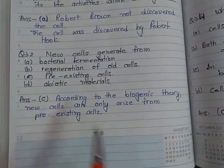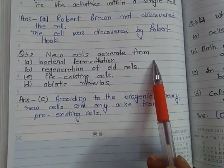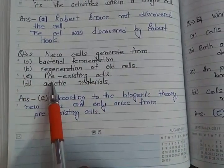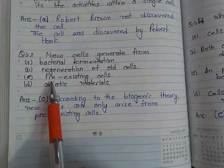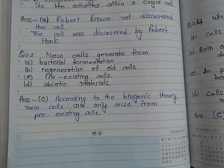Question 2: New cells generate from? Answer is C — from pre-existing cells.